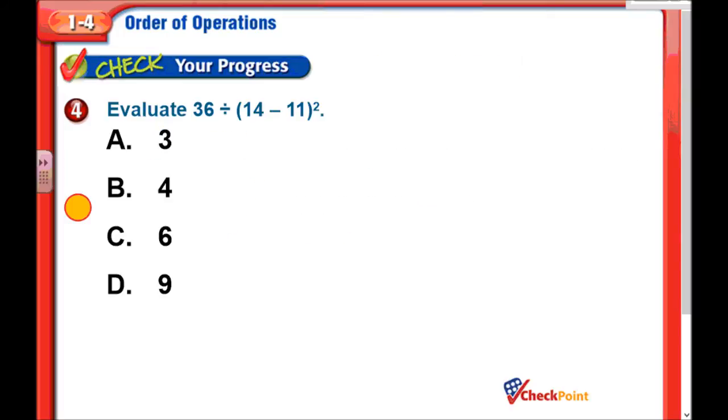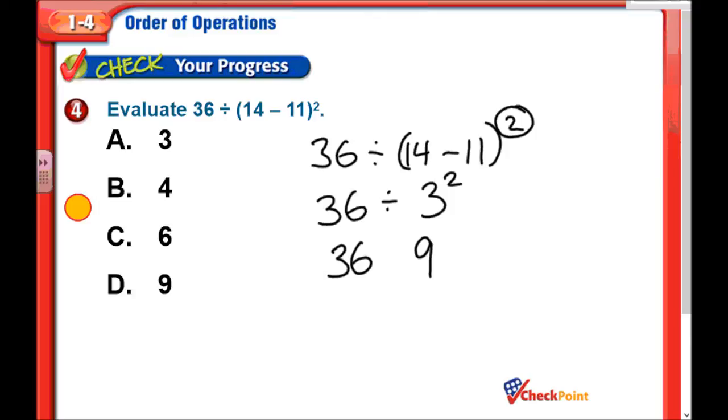Our turn. So we have 36 divided by 14 minus 11 squared. Step 1, let's go through those order of operations. Do we have any parentheses? Sure. 14 minus 11. 14 minus 11 is of course 3. Now let's bring everything else down. We have our 36 divided by 3. But let's not forget our exponent, 3 squared. Next step, exponents. Yes, we do have exponents. So we take our 3 and we raise it to the second power. 3 to the second power, I think we had that on our previous slide. This is 9. Bring down our 36, bring down our division sign. Finishing with 36 divided by 9. 36 divided by 9 is 4. Looks like the answer was B.